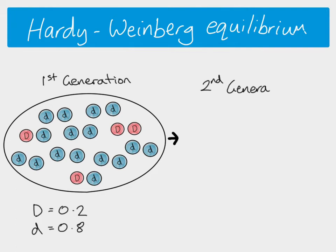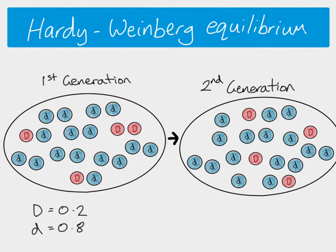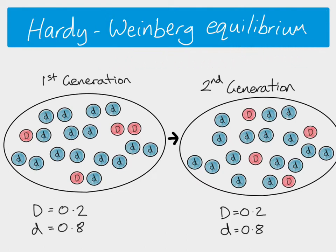If we look at the same population — the same gene pool in the second generation, once this first generation has all reproduced — and we find that the population has got the same allele frequencies as before, we see again that the dominant allele has a frequency of 0.2 and the recessive has a frequency of 0.8. There has been no change in the allele frequencies from the first generation to the second generation. If there is no change in the allele frequencies, then we say this population for this gene is at Hardy-Weinberg equilibrium. Equilibrium means balance, and this particular gene is not evolving.